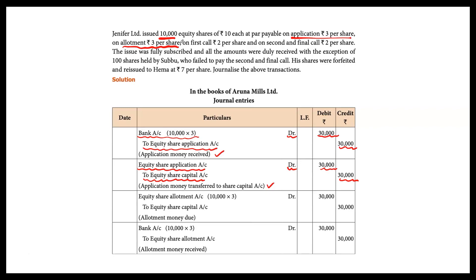Next, transfer of application money and allotment entry: Equity Share Allotment Account debit 10,000 into 3 = Rs 30,000, credit Equity Share Capital Account. Then Bank Account debit Rs 30,000, Equity Share Allotment Account credit Rs 30,000.